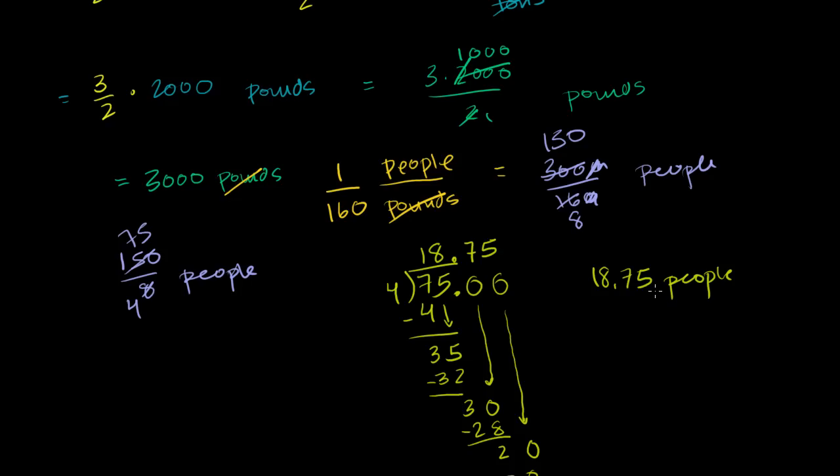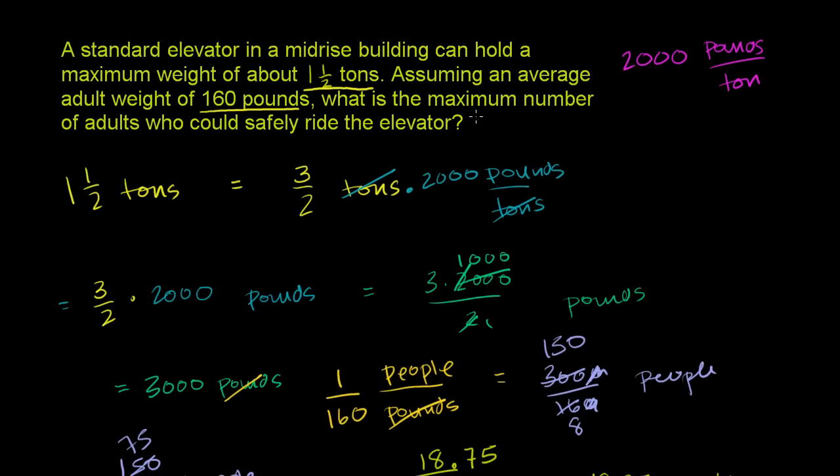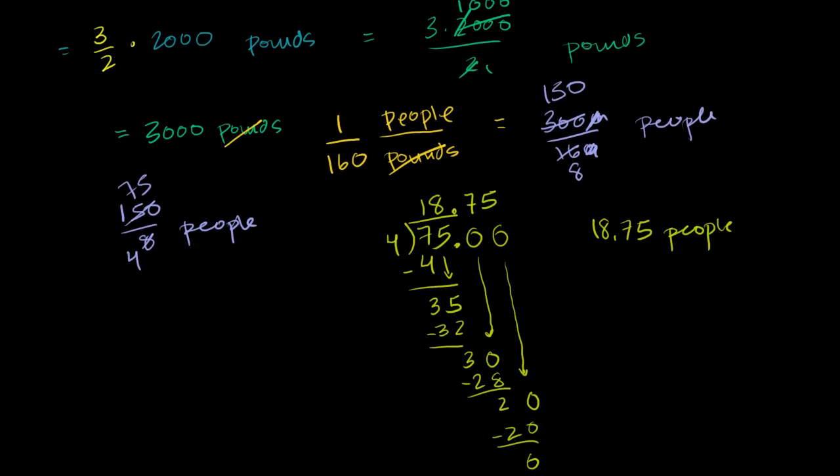18.75 average 160 pound people would weigh 3,000 pounds. What is the maximum number of adults who could safely ride the elevator? Well, if they're all going to be average, then the maximum number of adults, since you can't have 3 quarters of a person, or 75 hundredths of a person, the maximum number is going to be 18. If you have 19 average weight adults, you're going to be too heavy and the elevator will fall or something.